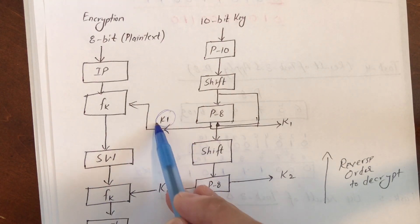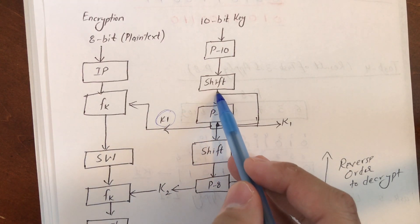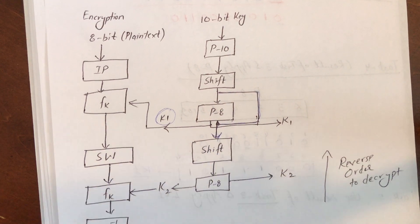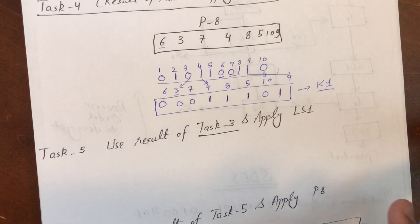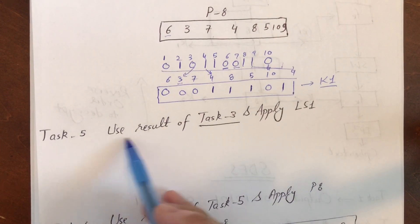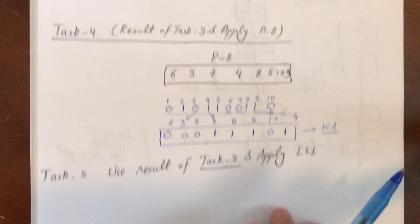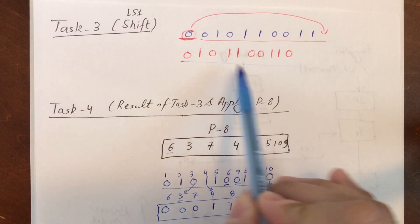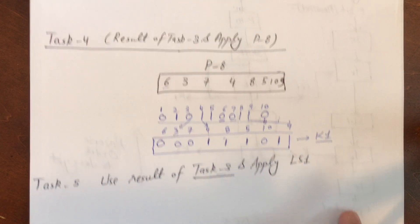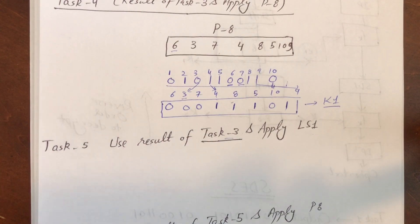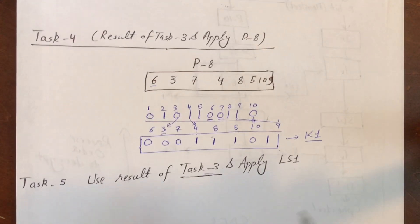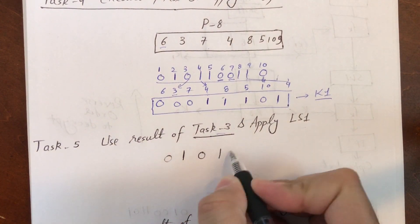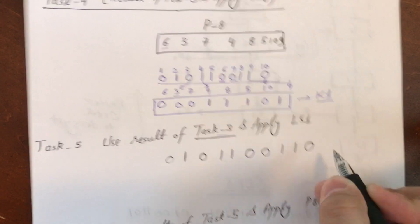After P8, K1 is ready. Next, for Task 5, it's very important: take the Task 3 output — where we did the left shift — and apply Left Shift 1 again. Do NOT use the Task 4 result. Use the Task 3 result and apply LS1.